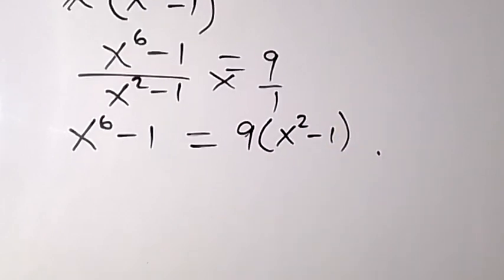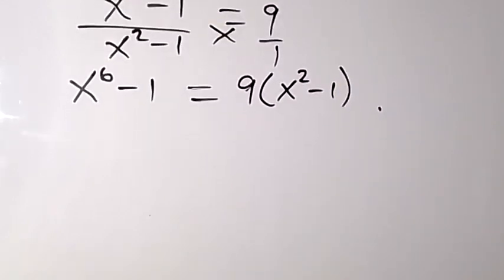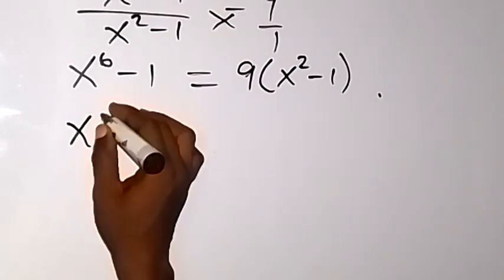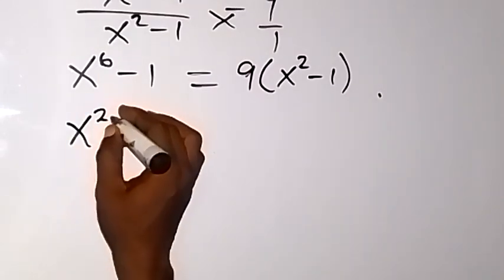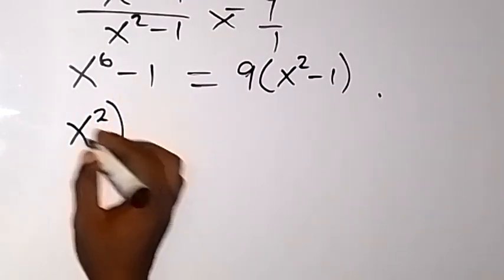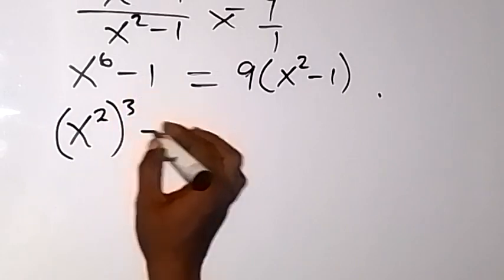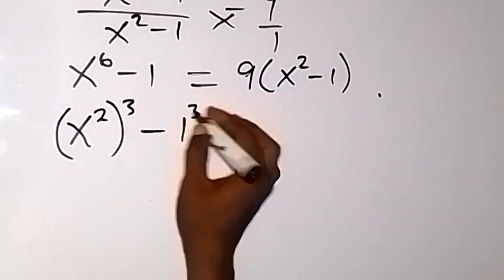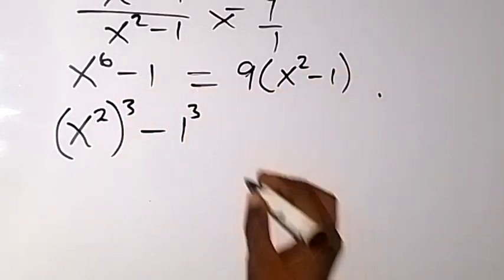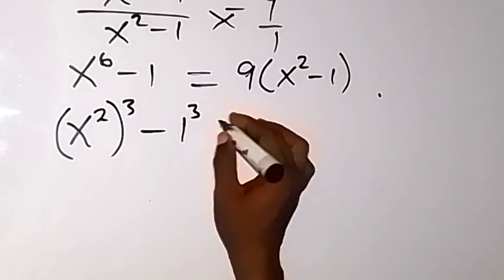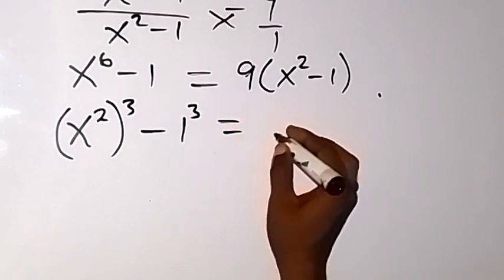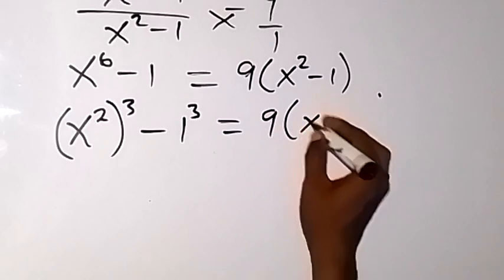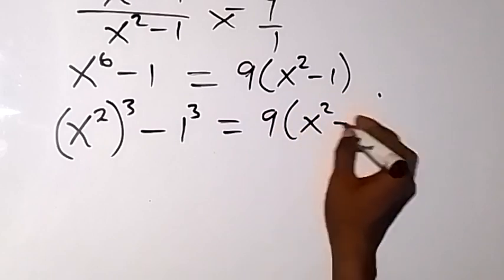Then what we have here now, we can rewrite this and say this will be x squared raised to power 3 minus 1, and 1 can be written as 1 raised to power 3 as well, which equals 9 times bracket x squared minus 1.